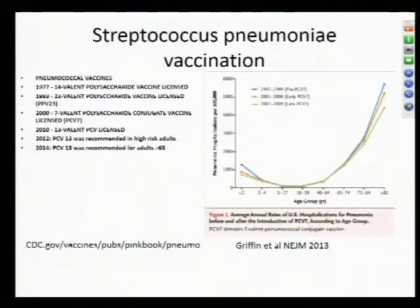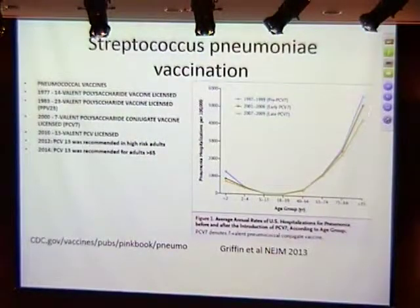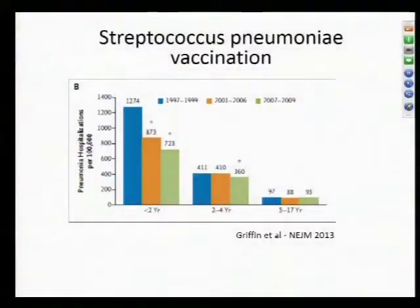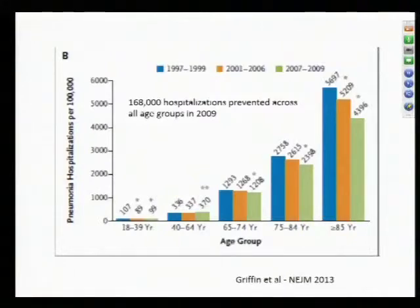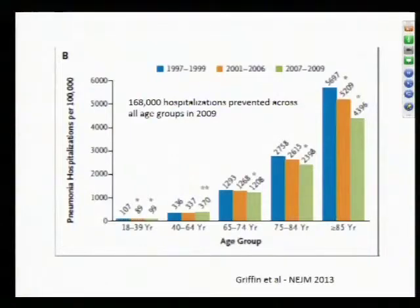The decrease in hospitalizations seen even in age groups not yet targeted for vaccination suggested possible herd immunity from reduced community carriage. One study estimated 168,000 hospitalizations prevented. However, other secular trends were happening simultaneously — more influenza vaccines, and more robust hospice and palliative care keeping people out of the hospital at end of life — so those data should be interpreted with caution.